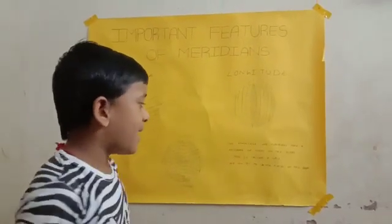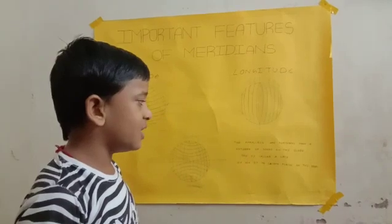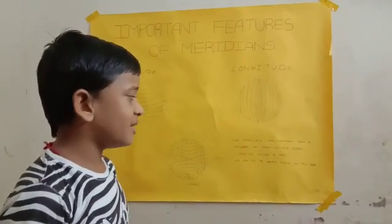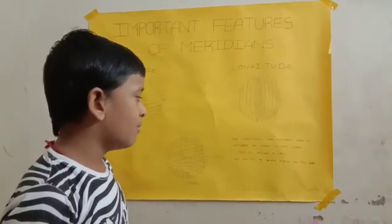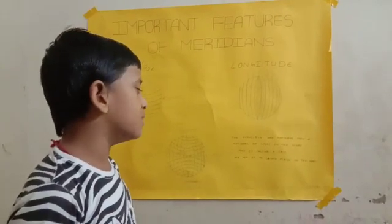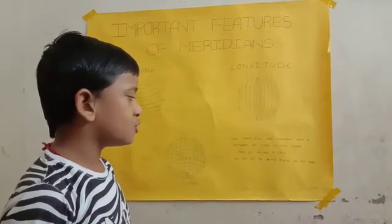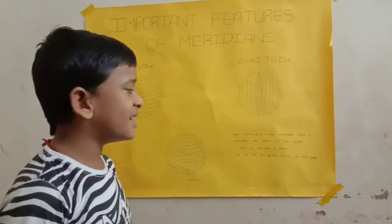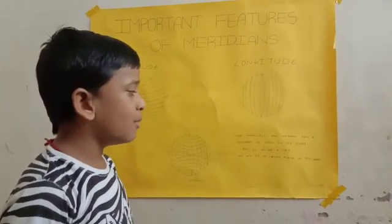The parallels and meridians form a network of lines on the globe. This is called a grid. We use it to locate places on the globe.